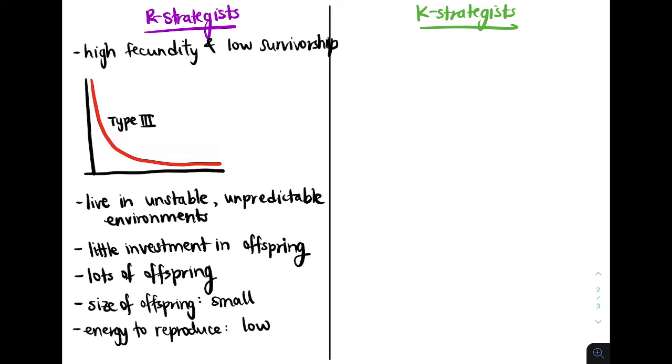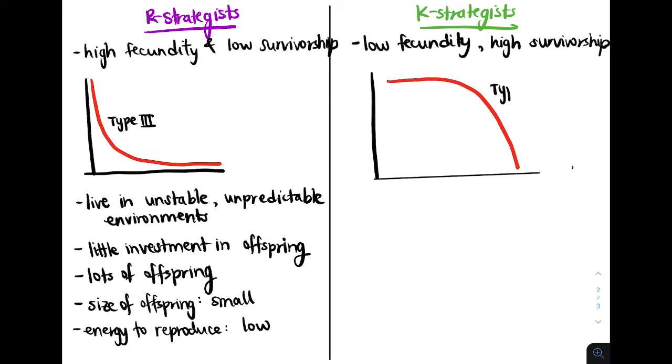But this is really different from K strategists who actually have low fecundity but high survivorship. So if we take a look at a survivorship curve for a K strategist, we'll notice that they're mostly type 1 or maybe type 2 because most will survive to an old age.